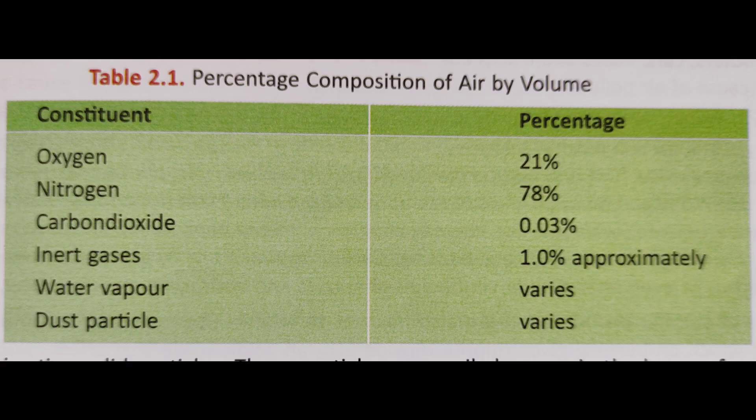Now composition of air. You can see the percentage of composition of air by volume. Oxygen 21 percent, nitrogen 78 percent, carbon dioxide 0.03 percent, inert gases approximately one percent, water vapor varies, dust particles vary.